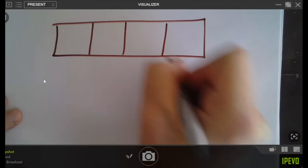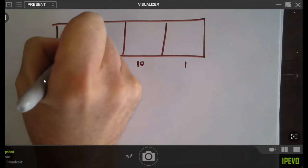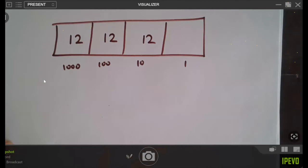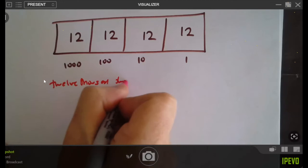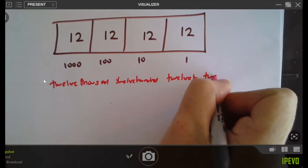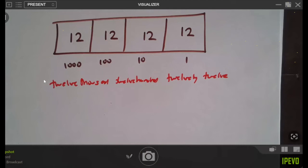Let me go extra crazy. I'm going to go up to the thousands. Ones, tens, hundreds, thousands. I'm going to have 12 thousands, 12 hundreds, 12 tens, and 12 ones. I can write that number out: 12,000 plus 1,200 plus 120 plus 12. What is that number really? That's not acceptable in polite society. If you had to fix it, what number is it? I'm seeing 13,332 a couple of times in the chat.